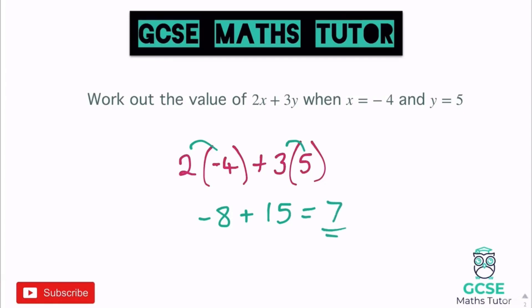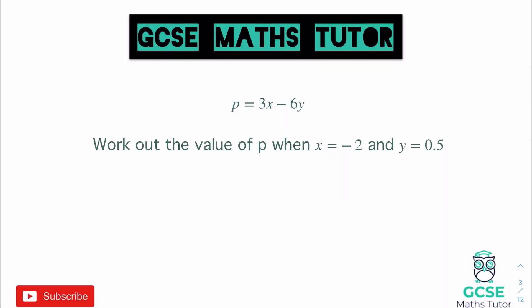So negative 8 add 15 is 7 — that's our final answer. Let's look at one more before you have a go. This question says p = 3x − 6y, and we need to work out the value of p when x equals negative 2 and y equals 0.5. Again, we're just going to sub these in using brackets.